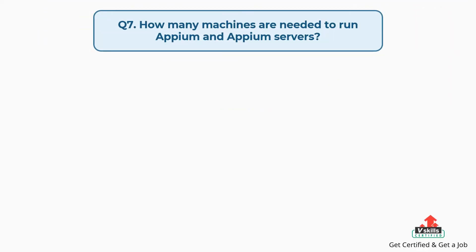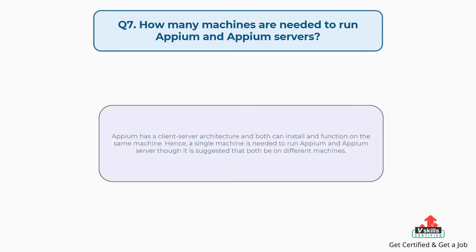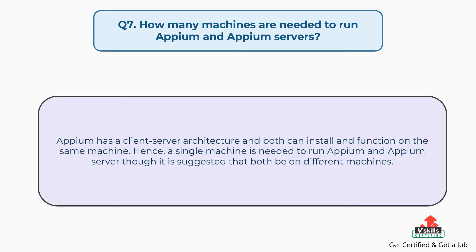Question number 7: How many machines are needed to run Appium and Appium servers? Appium has a client-server architecture and both can be installed and function on the same machine. Hence, a single machine is needed to run Appium and Appium server, though it is suggested that both be on different machines.